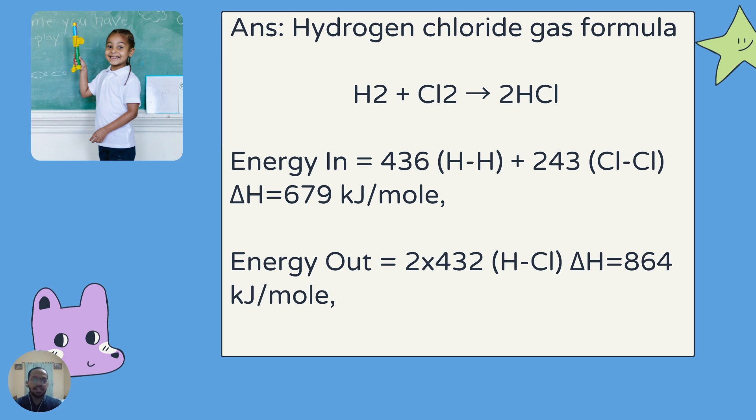The energy in is 679 kJ per mole. In energy out, we can see here the value 432 is multiplied by 2. Why are we multiplying this value with 2? Because here 2 moles of HCl is being formed.